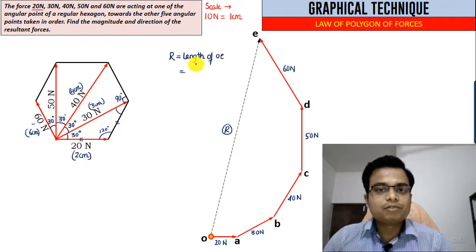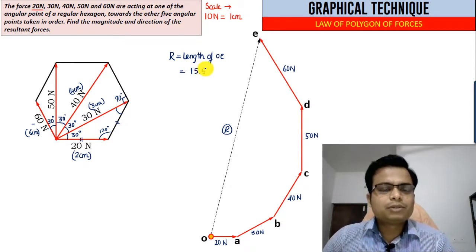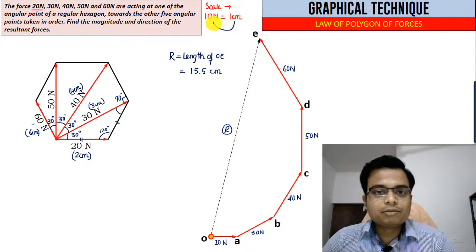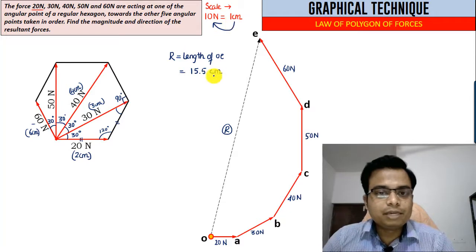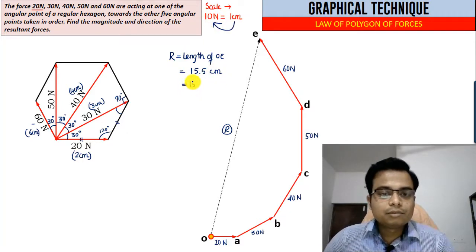If you try to measure this length with the help of a simple scale, this is going to work out as 15.5 centimeters. And we know one centimeter is equivalent to 10 Newtons. In place of centimeter you can put 10 Newton over here.